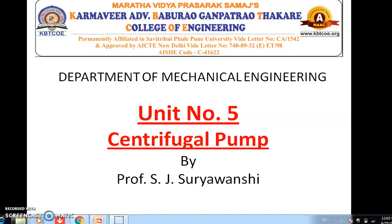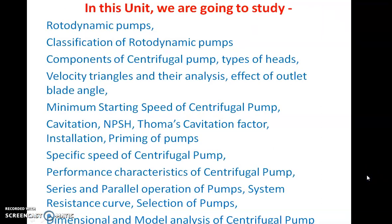Hello friends. Today we are going to see unit number 5, that is centrifugal pump. In this unit we are going to study rotodynamic pumps, classification of rotodynamic pumps, what is centrifugal pump, components of centrifugal pump, types of heads, velocity triangle and their analysis, effect of outlet blade angle, minimum starting speed, cavitation, NPSH, installation, priming, specific speed, performance characteristics, series and parallel operation of pumps, and dimensional and model analysis of centrifugal pump.